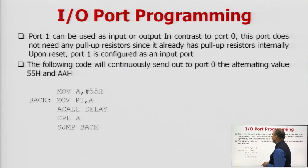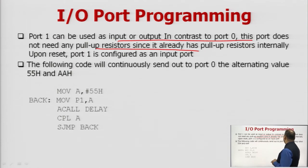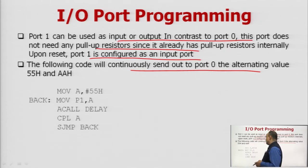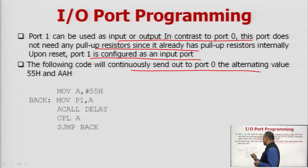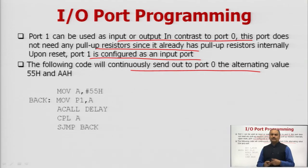Port 1 can be used as input or output. In contrast to port 0, port 1 does not need any pull-up resistor since it already has pull-up resistors internally. Upon reset, port 1 is configured as an input port. The following code continuously sends out to port P1 the alternate values 55H and AAH.